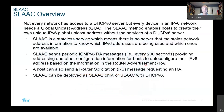Not every network has access to a DHCP server, but every device in an IPv6 network needs a global unicast address. The SLAAC method enables hosts to create their own unique IPv6 global unicast address without the services of a DHCPv6 server. SLAAC is a stateless service — there is no server that maintains network address information to know which IPv6 addresses are being used and which ones are available.